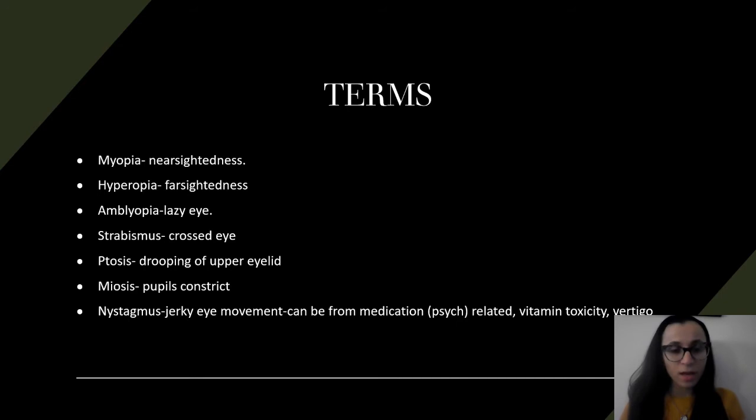Here are terms that you just have to know. The first one is myopia, which is nearsighted. Hyperopia, I like to remember like hyper, it's a lot, so it's very far, it's farsighted. Amblyopia is lazy eye. The next one is strabismus, so cross-eyed. That's easy because cross-eyed has two S's, strabismus has a bunch of S's.